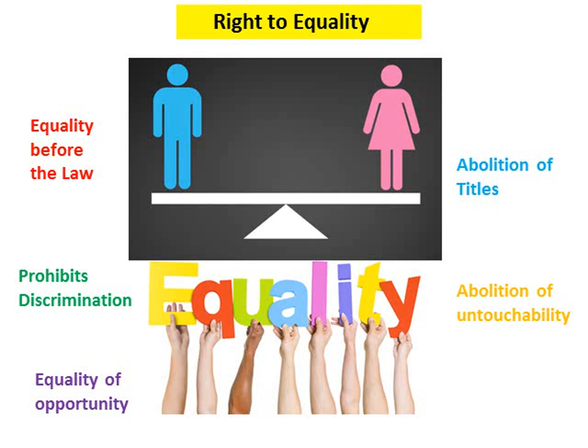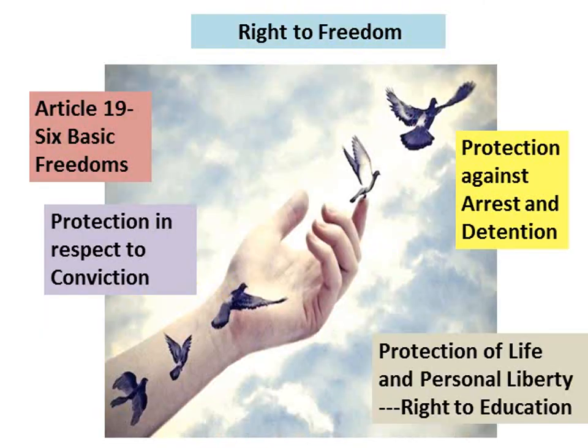The next classification of fundamental rights is Right to Freedom. Article number 19 is very important to remember — it guarantees six different freedoms to citizens: freedom of speech and expression; freedom to assemble peacefully without arms; freedom to form associations and unions; freedom to move freely throughout India; freedom to reside and settle in any part of India; and freedom to practice any profession, trade, or business.